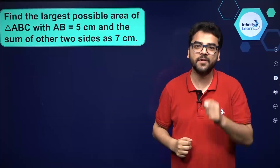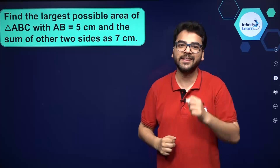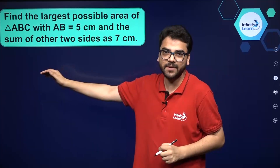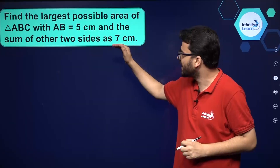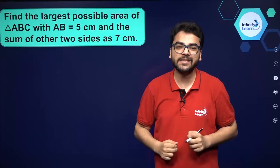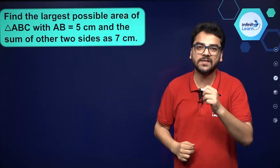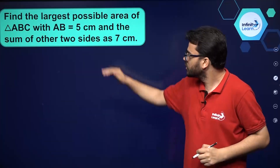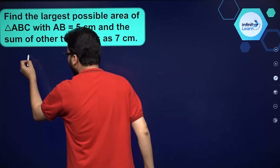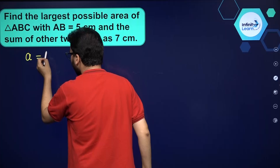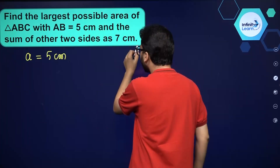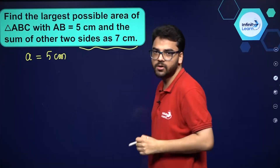We have a question in which we have to find the largest possible area of triangle ABC, in which the length of one side and the sum of the lengths of the other two sides is given. We are going to use Heron's formula. AB is equal to 5 centimeters, which we denote by small a, and the sum of the lengths of the other two sides is given to be 7 centimeters.